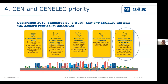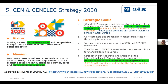Within CEN and CENELEC, since 2019 sustainability and the environment became a priority. A declaration — 'Standards with Trust' — was issued to support policymakers and confirm that we can help implement European policy objectives, including the SDGs. Now there is the new CEN-CENELEC strategy adopted in November last year, where sustainable development is mentioned in the vision, in the mission, and among the five strategic goals. Combating climate change is specifically highlighted, as standardization should be recognized as a critical catalyst for sustainable development.